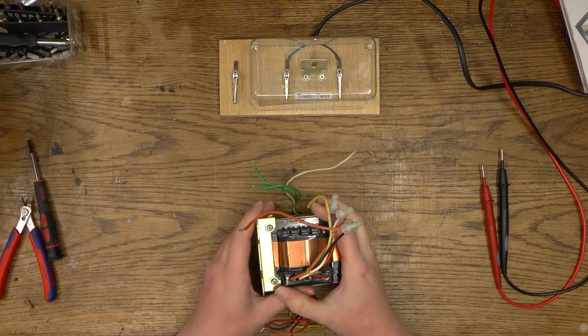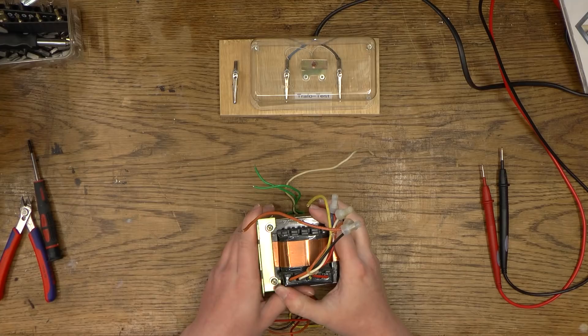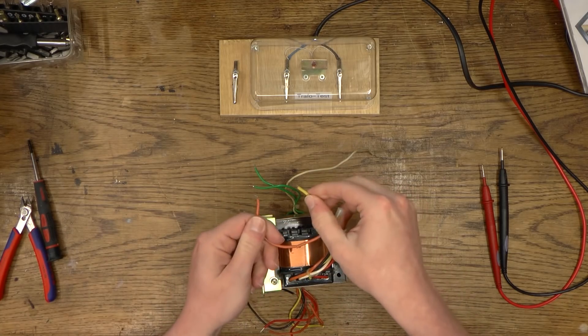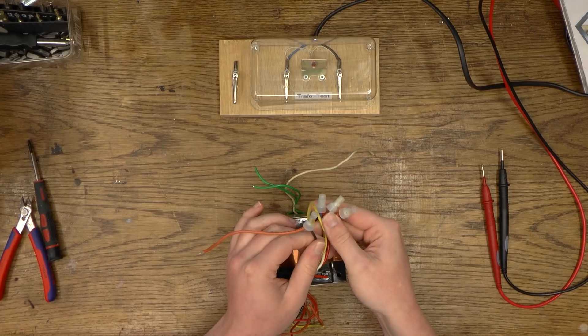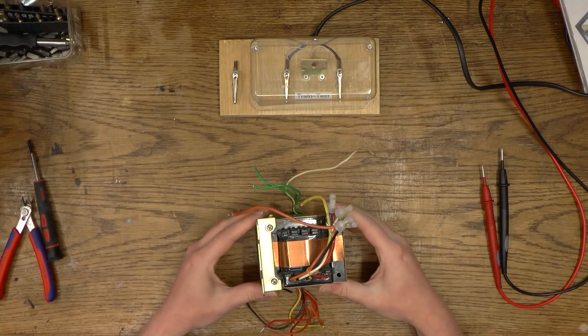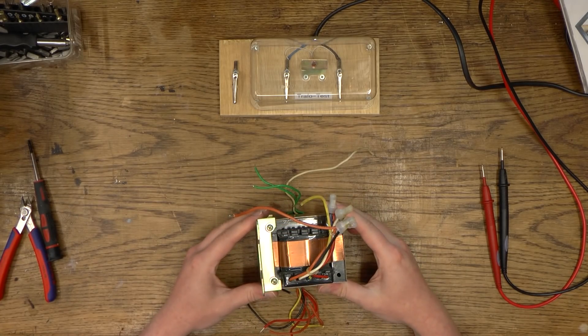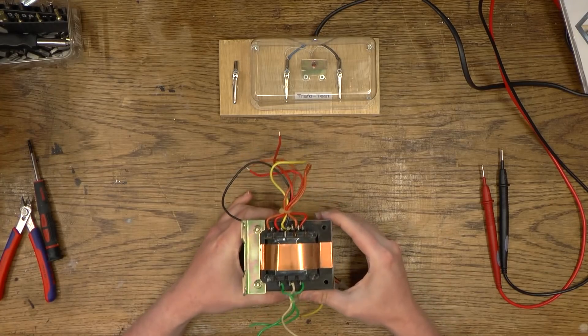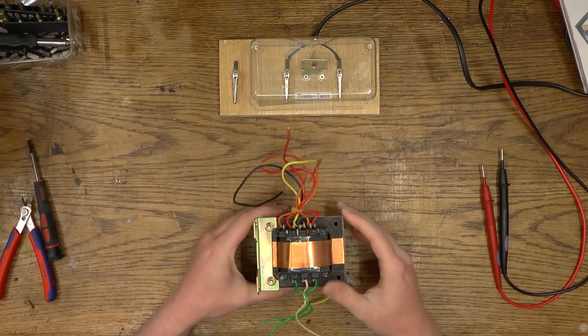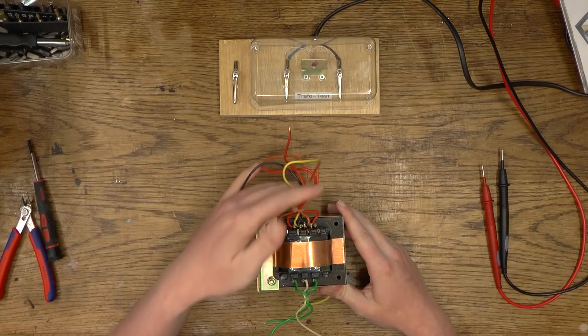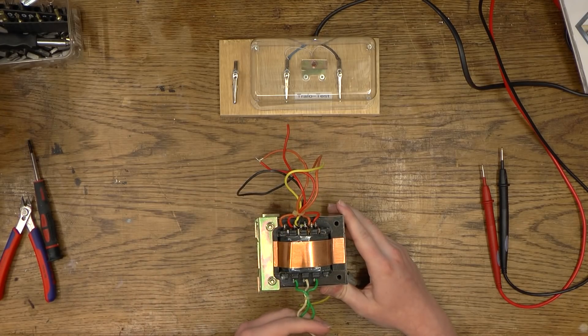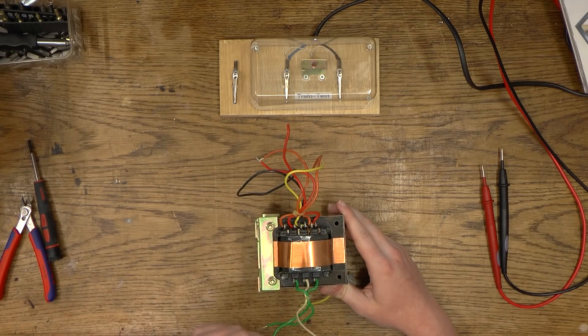I'm pretty sure this right here is the primary. We do have two inputs right there and then all the rest is capped off so those might be inputs for different mains voltages. Then on the other side we have a whole bunch of outputs. I am assuming these are outputs. I'm assuming this is the secondary.